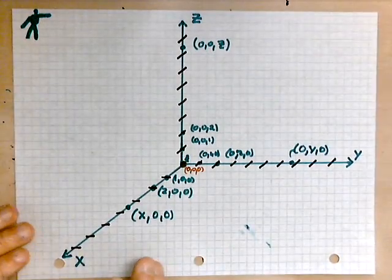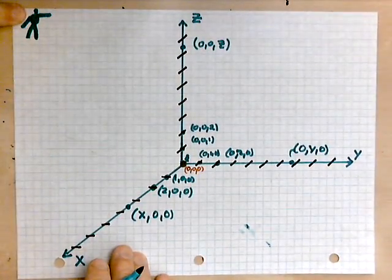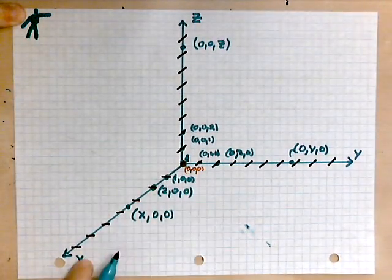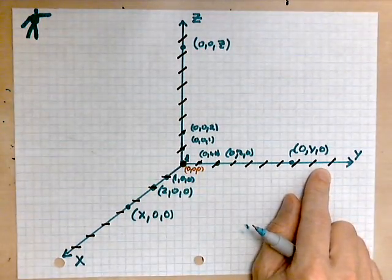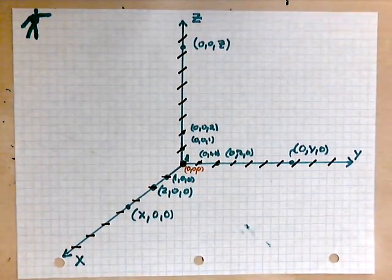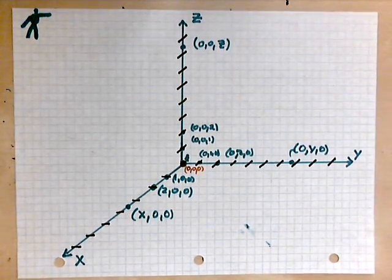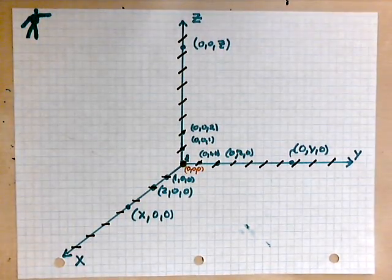And this is a right-handed coordinate system. As you can tell, this guy's arm here falls along the x. His left arm falls along the y, so we call this a right-handed coordinate system. And the purpose of the system, of course, is to locate objects.